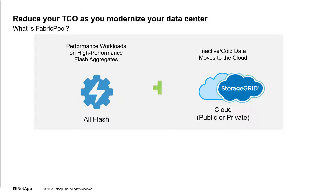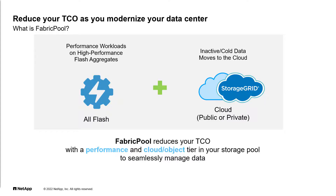Let me start by giving you an overview of the FabricPool solution. FabricPool enables AFF and fast high-performance storage systems to tier infrequently accessed data to an S3-based target. FabricPool works the same way for both NAS and block volumes because the tiering takes place at the ONTAP file system level, which may be familiar to you under the WAFL moniker.